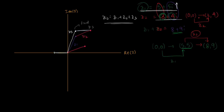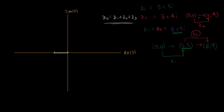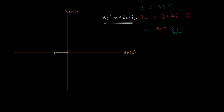If you instead had subtraction, we can use the same example. Z1 minus Z2: five minus three gives two, and five minus four gives one. So Z1 minus Z2 equals 2 plus i. This is the difference between Z1 and Z2.